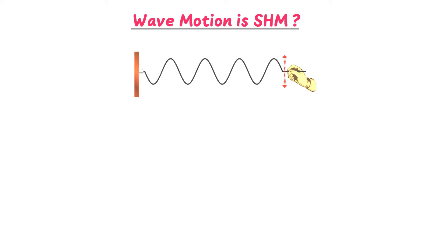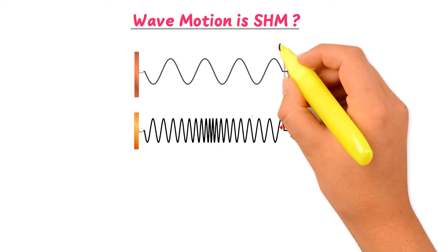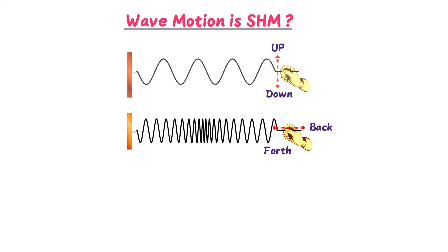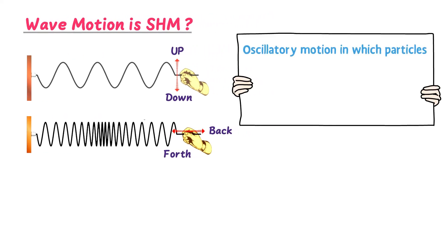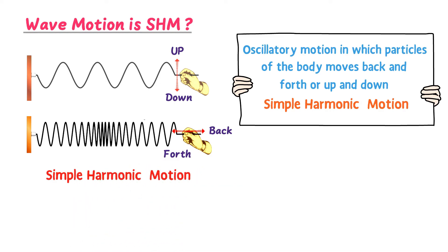As a bonus tip, why is wave motion also called simple harmonic motion? In transverse waves, particles of the medium move up and down about their mean position. In longitudinal waves, particles move back and forth about their mean position. We have already learned that oscillatory motion in which particles move up and down or back and forth about their mean position is called simple harmonic motion, or SHM. Therefore, during wave motion, the particles of the medium execute simple harmonic motion about their mean position.